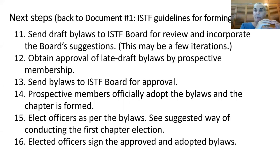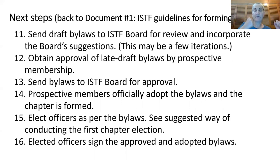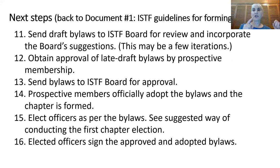You'll take it to your prospective members for their vote of approval, then send it off to the board for their stamp of approval. It comes back to the chapter members, you make another vote of adoption, and your chapter is formed. Step 15 is to carry out the election as per the bylaws — we have some suggestions on how to do it in document one. Your elected officers then sign the approved and adopted bylaws, date it, and you are ready to roll.